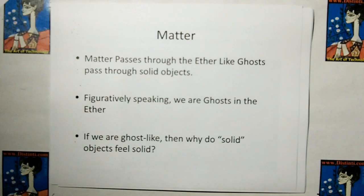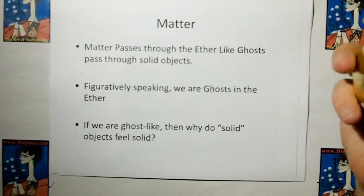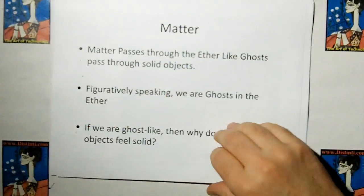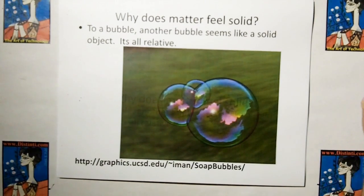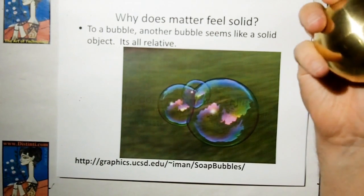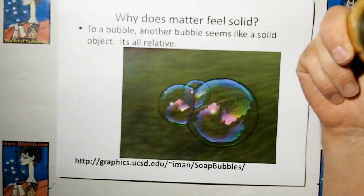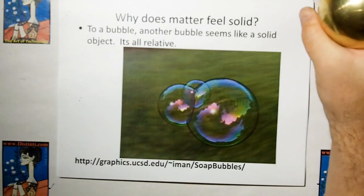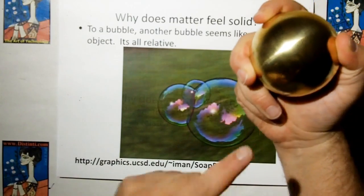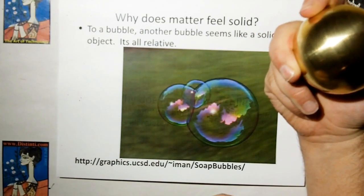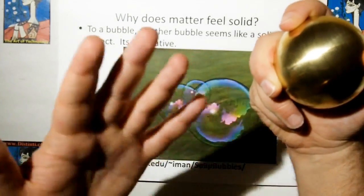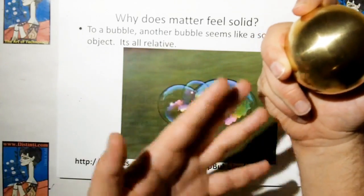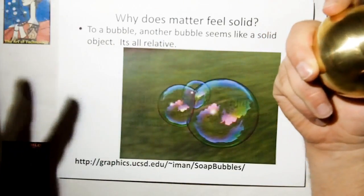Someone might say: if we are ghost-like, then why do solid objects feel solid? How come my hand just doesn't pass through this heavy cannonball? The reason why matter feels solid is because a bubble to another bubble seems like a solid object — it's just a matter of relativity. This cannonball is a very fine bubble, and so is my arm. It's just that this is a little bit more dense than my arm relative to the Ether. But relative to the Ether, these are virtually non-existent.